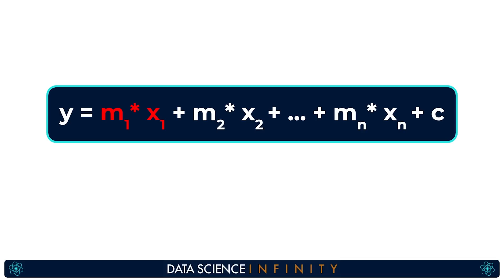So we have our first input x1 being multiplied by its unique slope or weight value m1. Then we have our second input x2 being multiplied by its unique slope or weight value m2 right up to our nth input being multiplied by its own slope or weight value. And of course we have our bias value or what we would call the intercept or constant in the linear regression tutorials being added at the end as well.